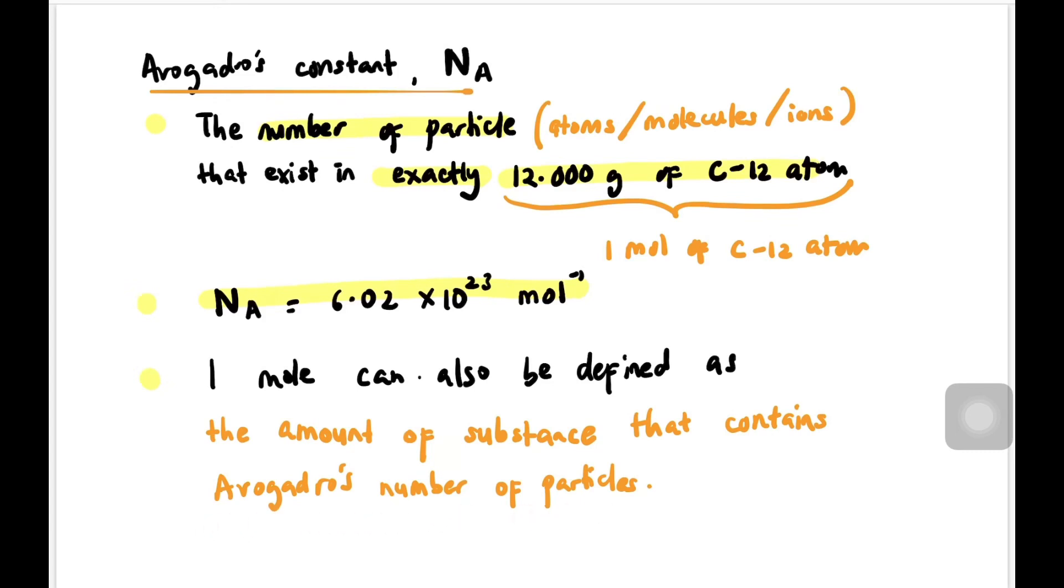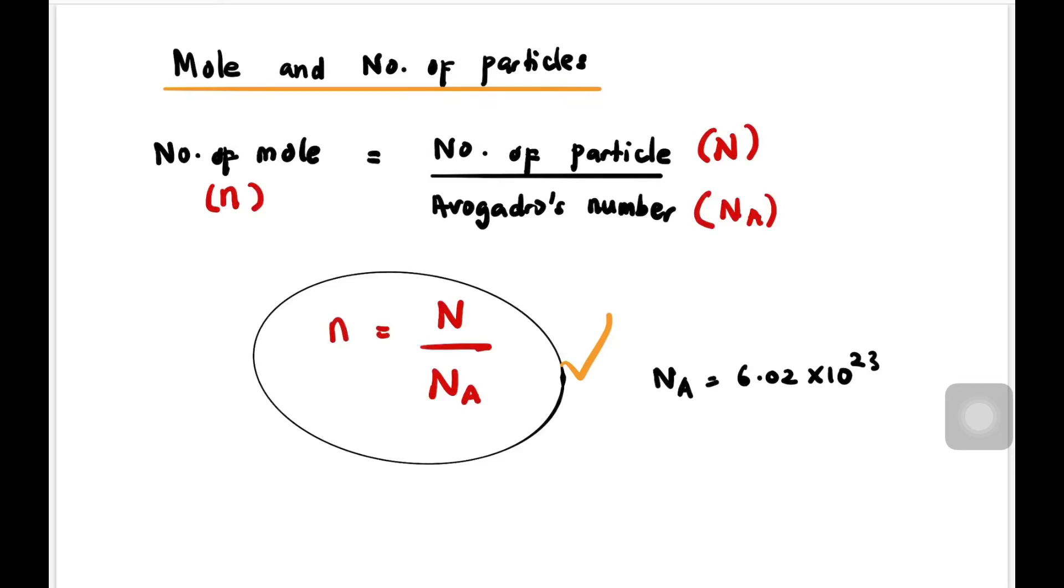Now let's have a look at the relationship between moles and number of particles. The number of moles, n, is actually equal to the number of particles divided by Avogadro's number: n = N/NA, which is 6.02 × 10²³.